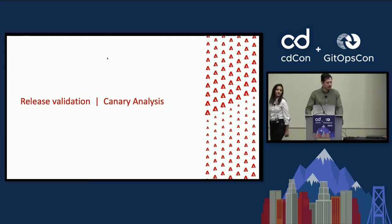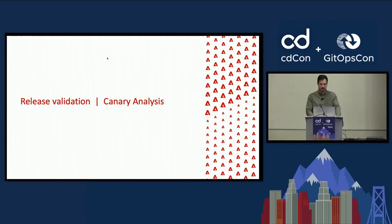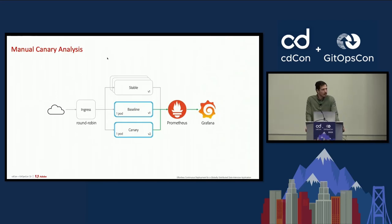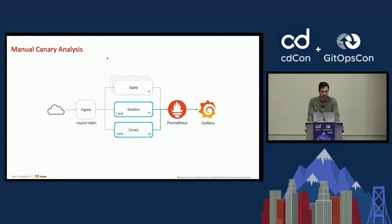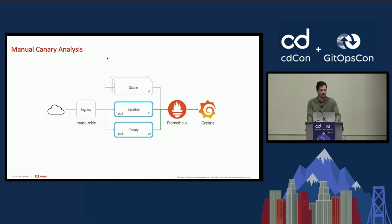The next stage in our journey is to automate the canary analysis. To validate the release, we deploy a new pod called canary running the new version, and a pod called baseline running the old version, alongside the existing pods called stable. We retrieve metrics from the baseline and canary to visualize and compare them in Grafana.